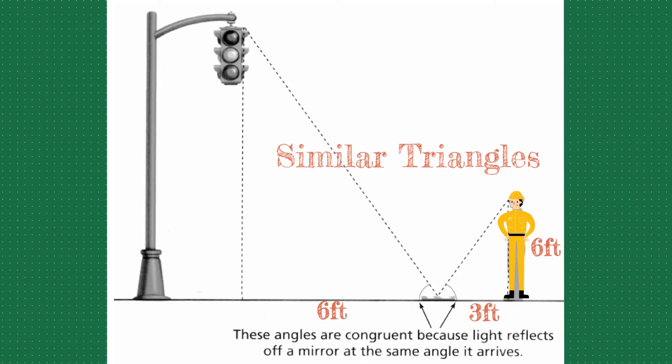These triangles are similar because when light reflects into a mirror, it reflects out at the same angle. You're standing at 90 degrees as well as the object, which means the third angle is the same. So these triangles have to be similar and so we can use a proportion to solve for the height.